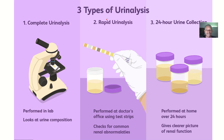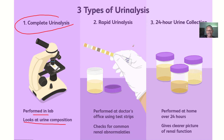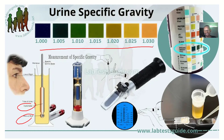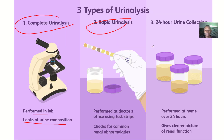There are three types of urinalysis. You have the complete urinalysis, which is performed in the lab and looks at the urine composition. You have the rapid urinalysis, which is just a strip. The strip has different colors, and wherever the color changes to, you just have to determine it.